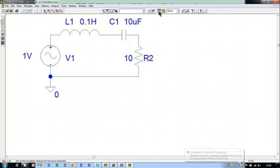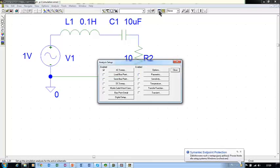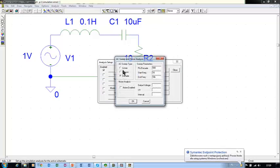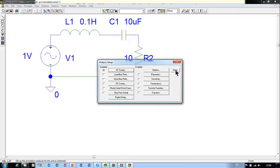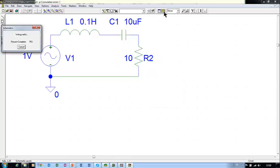Now let me go to Analysis Setup, AC Sweep. We set here 5, 10, and 10 kilohertz. Close, and we may start simulation.